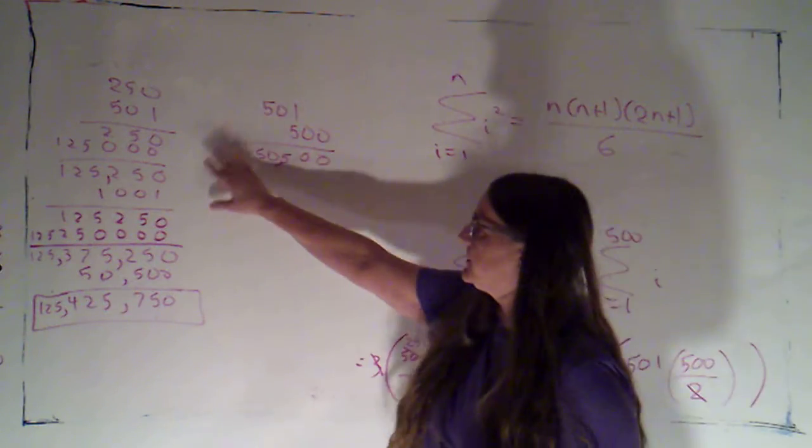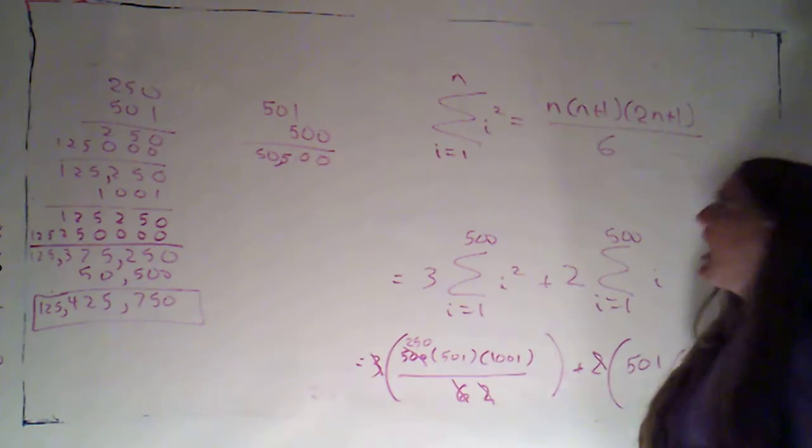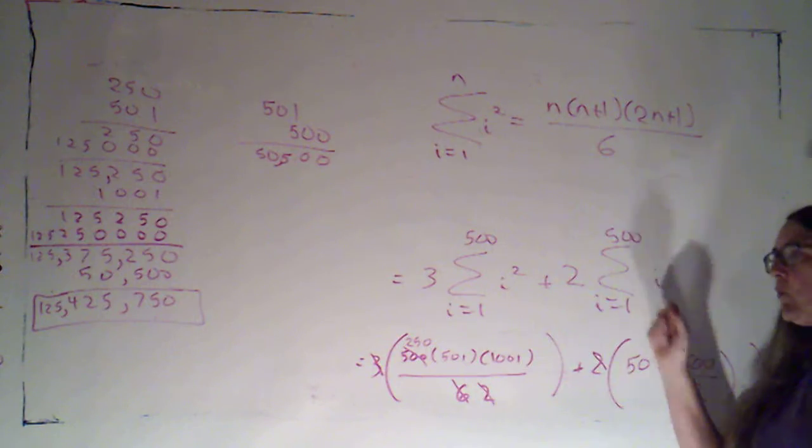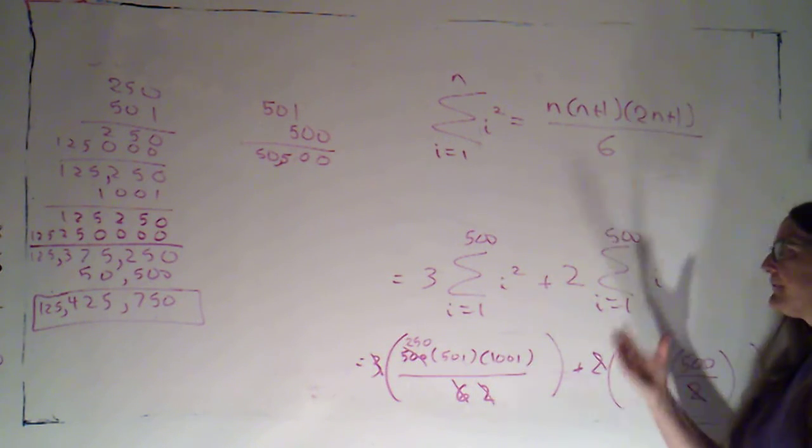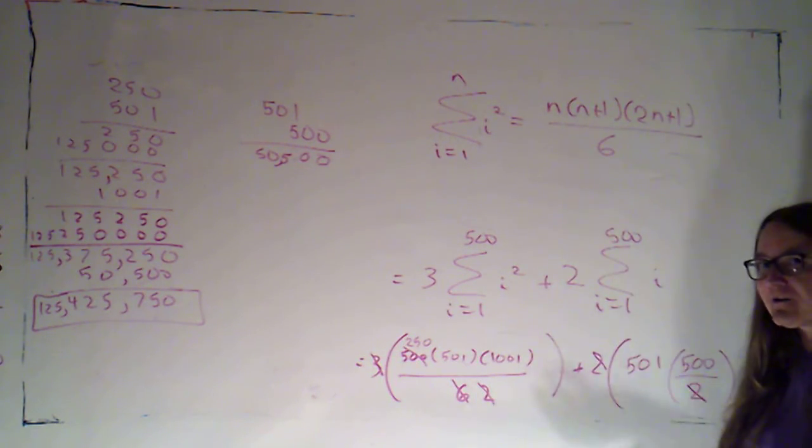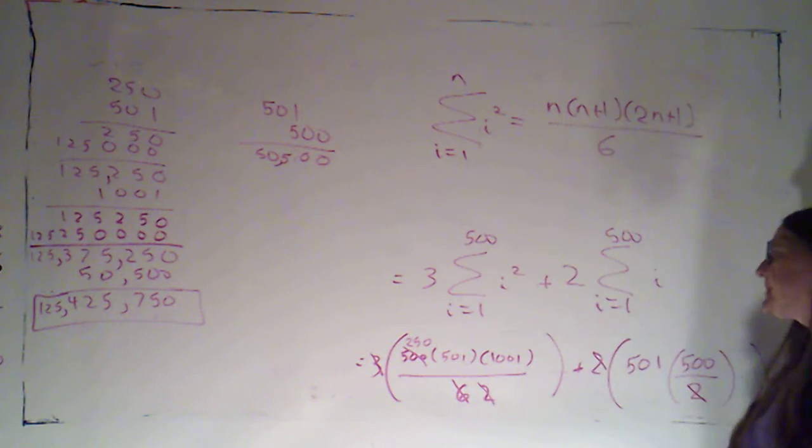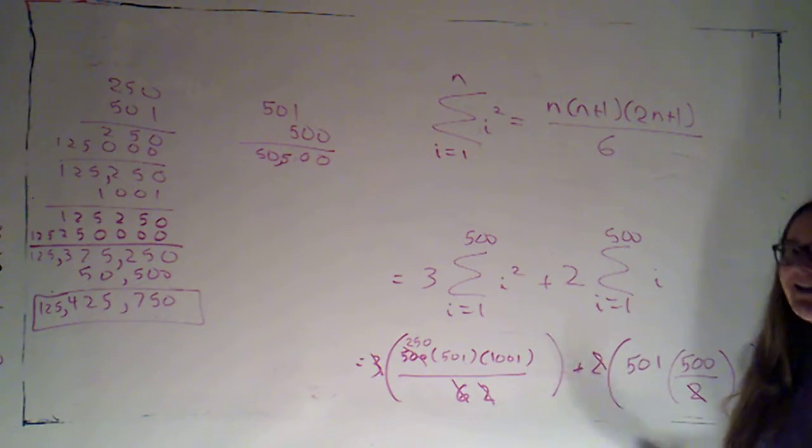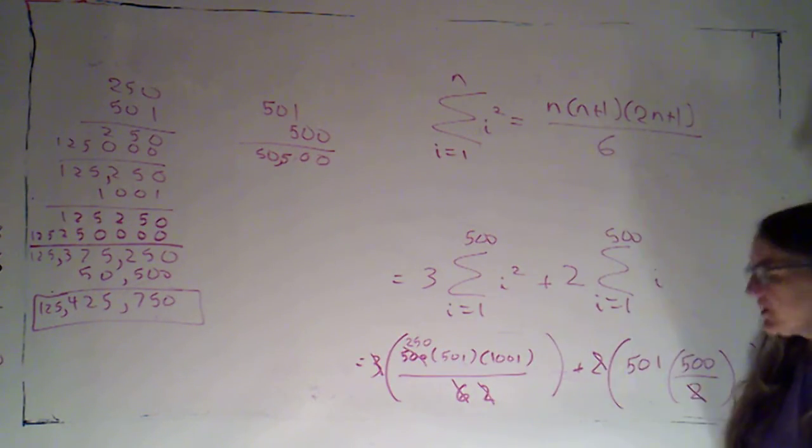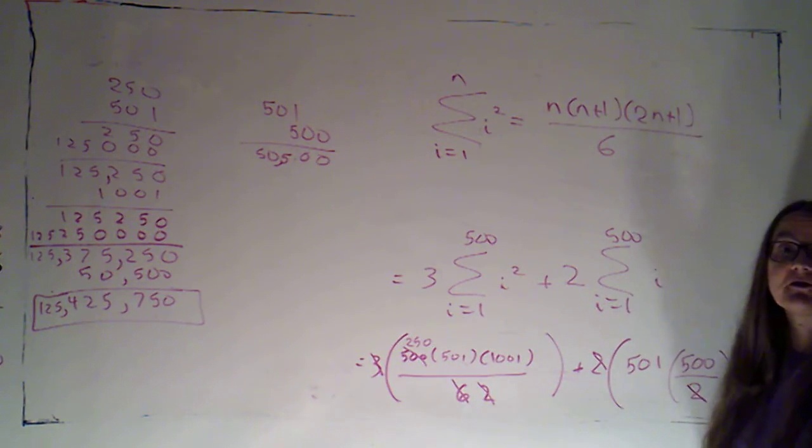One hundred twenty five million four hundred twenty five thousand seven hundred fifty. Now might have felt a little bit tedious doing that arithmetic. But a whole lot less tedious than adding up one piece at a time, the first five hundred squares times three plus the first five hundred integers times two. So these formulas really make these sums go an awful lot faster.